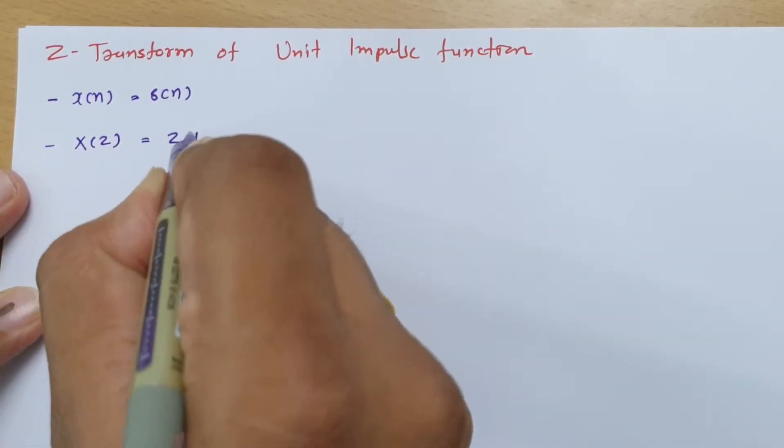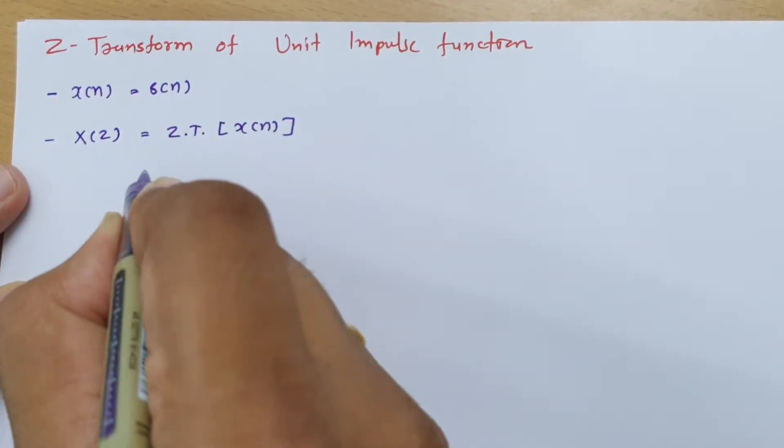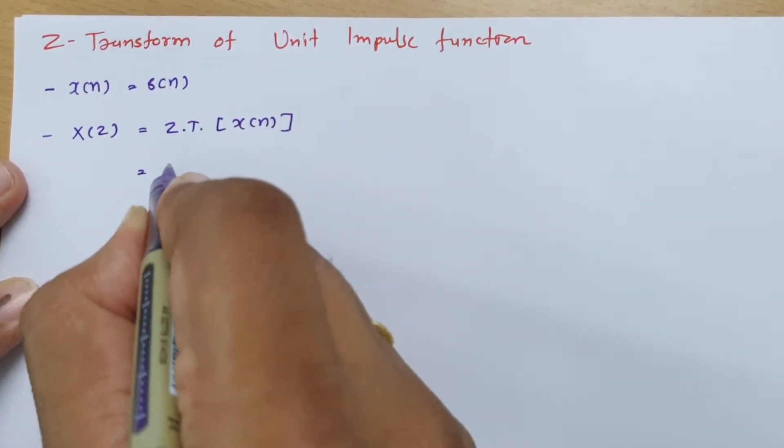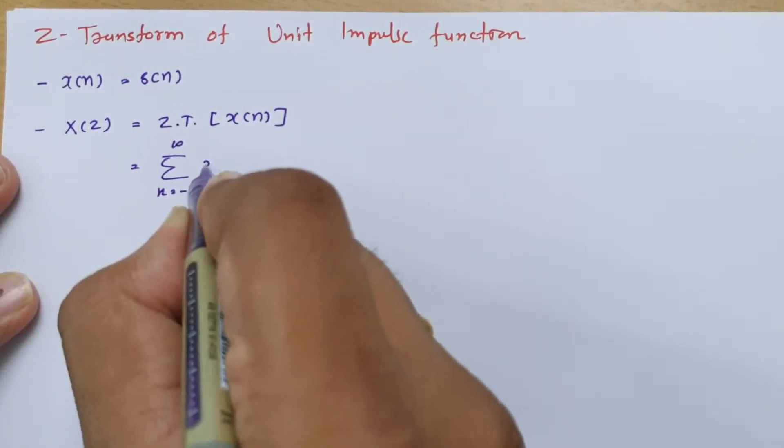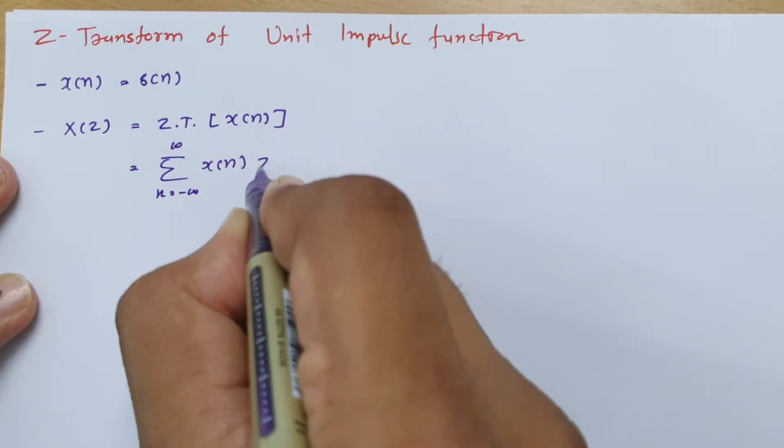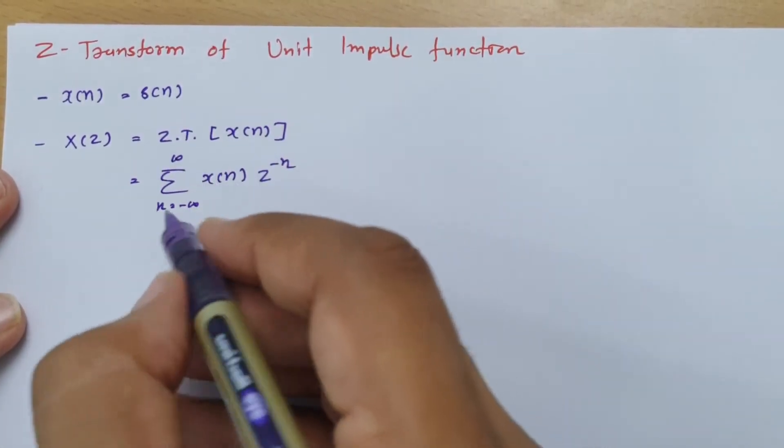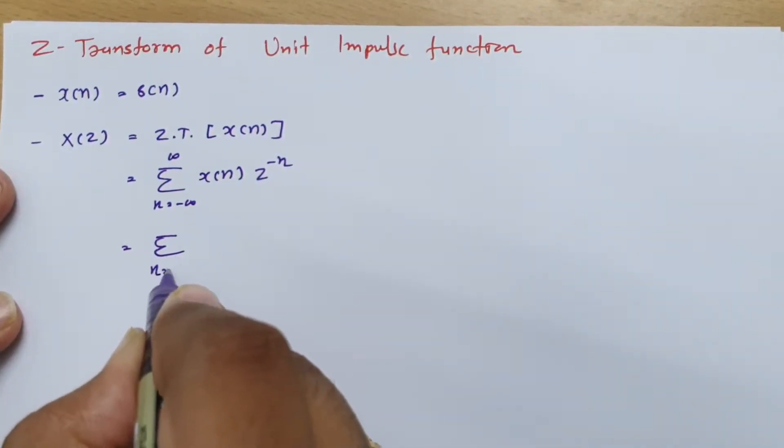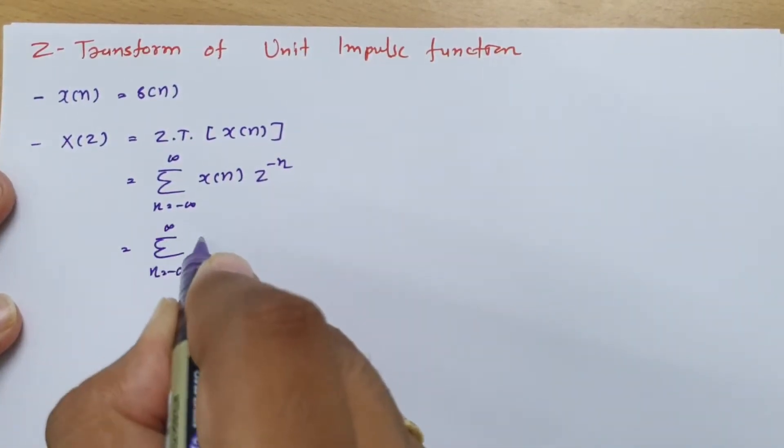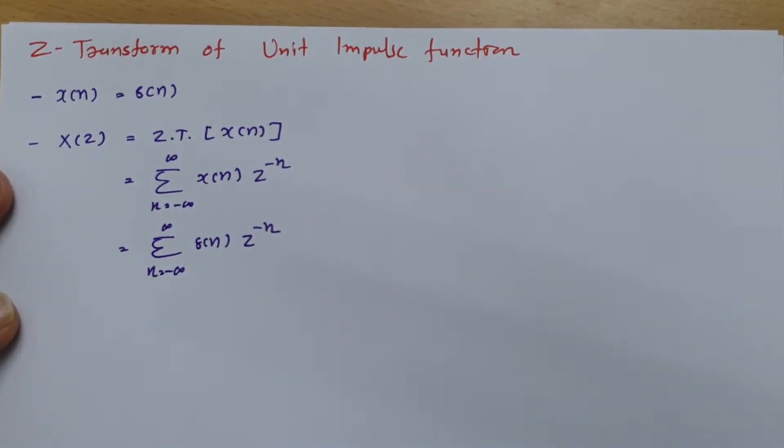So that is the Z-transform of X(n). The basic formula of Z-transform is the summation as n varies from minus infinity to infinity of X(n) times Z to the power minus n. If I substitute X(n) equals impulse function, then that is δ(n) Z to the power minus n.